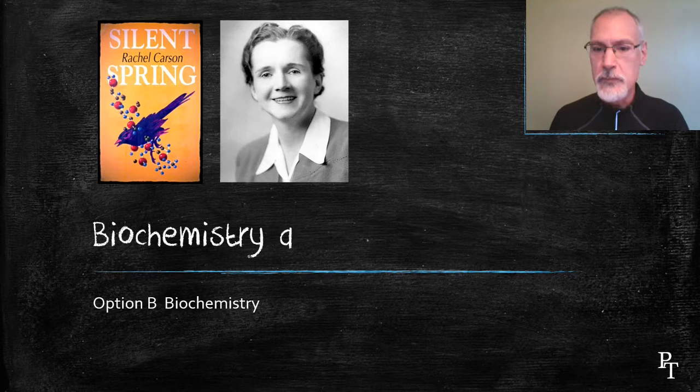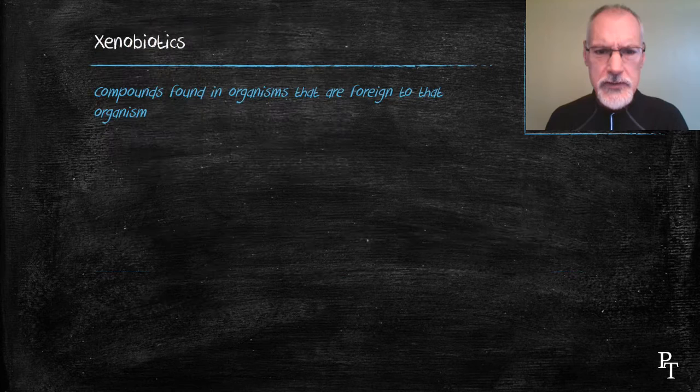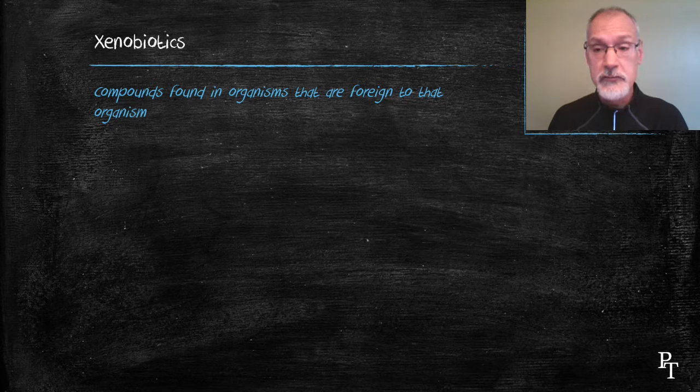This last unit is going to take a look at the biochemistry and the environment and some of her work. Let's begin with the definition of what are called xenobiotics. They're basically compounds found in organisms that are foreign to that organism.